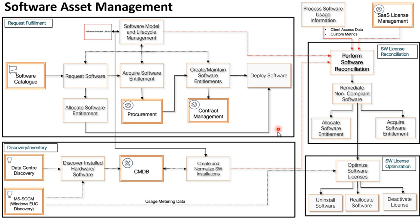Coming back to the diagram, the top left component gives you the number of license rights and the bottom left gives you the number of installations from your inventory. Comparing these two components gives you a compliance position, and that process is called software reconciliation.